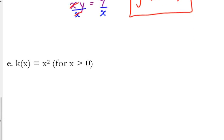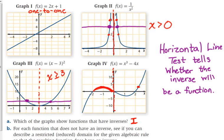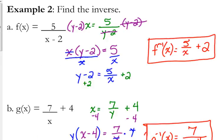So we get example e. K of x is equal to x squared, and in parentheses they have for x is greater than zero. They're restricting the domain here so that the inverse will be considered a function. This is what we were looking at with graph number 3 here. Same idea. Graph number 3 was just shifted over so that its line of symmetry was at 3 instead of at 0, but it's the same idea. They're just restricting the domain so that the inverse will be a function.